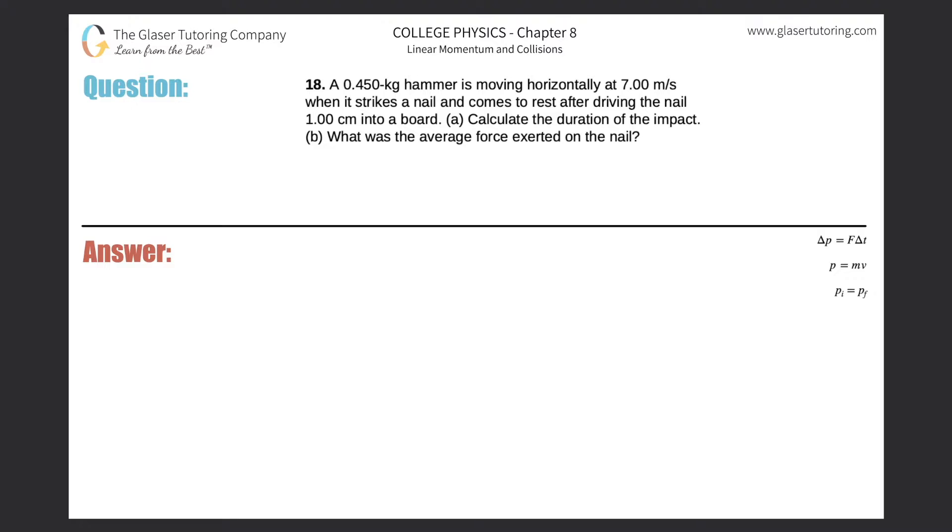Number 18: A 0.45 kilogram hammer is moving horizontally at 7 meters per second when it strikes a nail and comes to rest after driving the nail 1 centimeter into a board. Letter A: calculate the duration of the impact. All right, so for letter A, they're asking us for time.